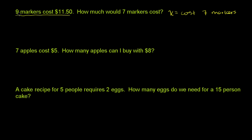So you could say that the ratio of nine markers to the cost of nine markers — nine to $11.50 — should be equal to the ratio of our new number of markers, seven, to whatever the cost of the seven markers is, which is x. So this is a completely valid proportion: the ratio of nine markers to the cost of nine markers is equal to seven markers to the cost of seven markers. And then you could solve this to figure out how much those seven markers would cost.